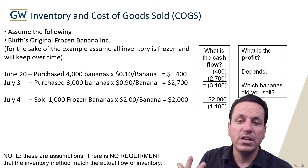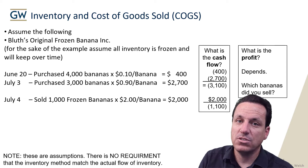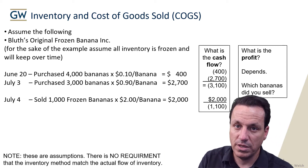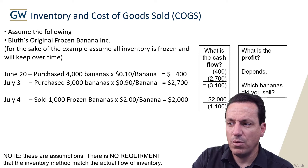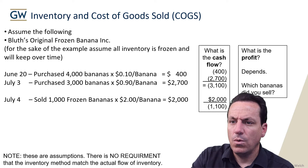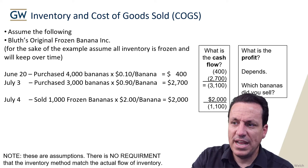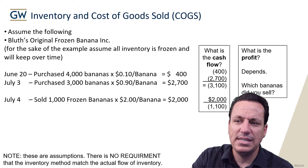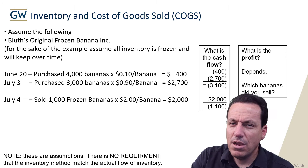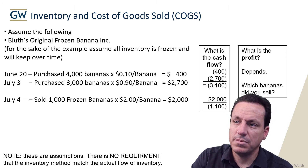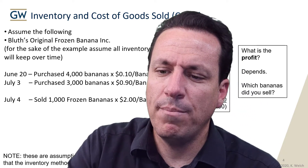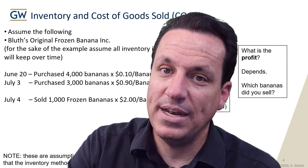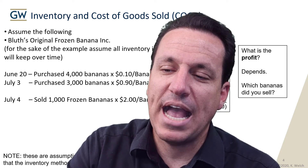What we really want is the accrual view — the economics of what's going on. How much money did we make based on each banana we sold? We're interested in the profit from selling each banana. Which bananas did we sell — the ones priced at 10 cents a piece or the ones priced at 90 cents? That makes a difference; it's an 80-cent-per-banana gap in what our profit is going to be. And herein lies the difference in inventory costing systems. These are just assumptions for accounting — there is no requirement anywhere that the inventory method must match the actual flow of inventory.